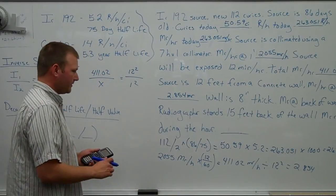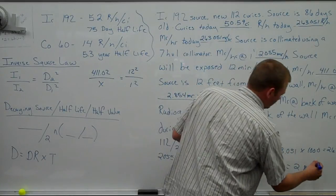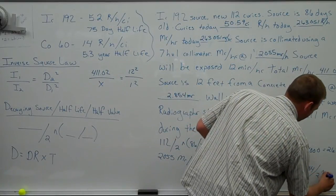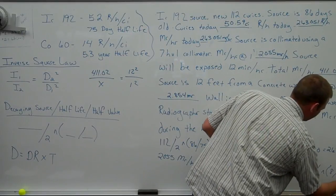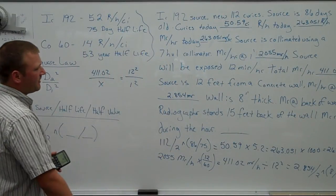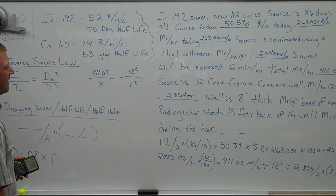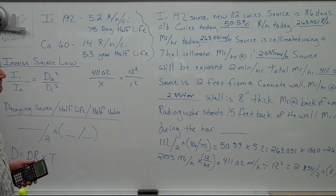Wall is 8 inches thick. So now we need to attenuate through the wall. Divide by 2 to the power of 8. And this is just a number you probably wouldn't know it off the top of your head unless you've seen it already. 1.75 inches of concrete is a half value thickness for iridium.